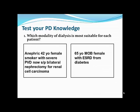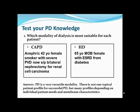A 65-year-old morbidly obese female with ESRD from diabetes — hemodialysis is better for this patient. Large US and Australian studies show that with hemodialysis there is a protective effect of obese BMI, whereas in peritoneal dialysis that protective effect is not seen. There are many patient types that could benefit from PD, depending on individual needs and transport characteristics.